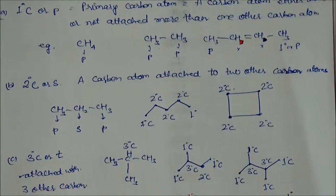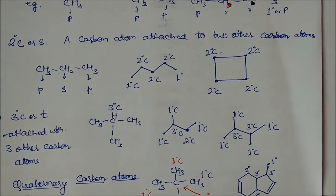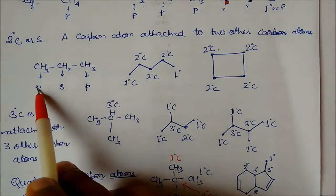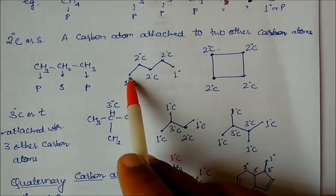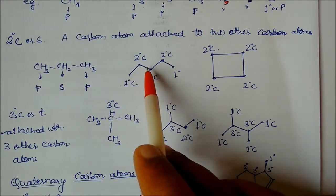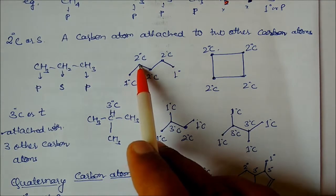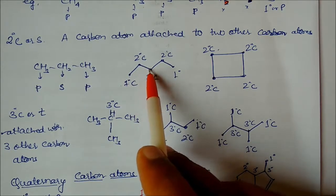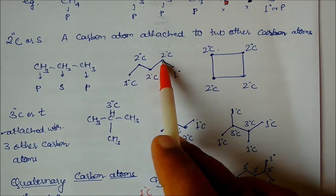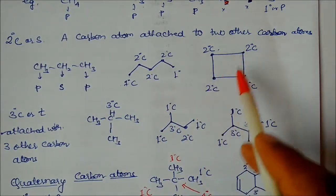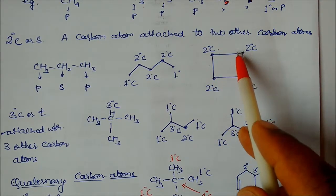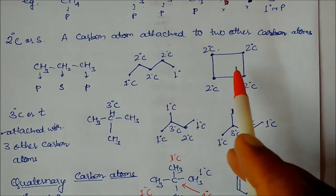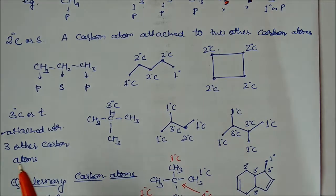Secondary carbon, represented as 2°, means the carbon is attached to two other carbon atoms and has two hydrogens. For example, in a chain, the middle carbon attached to this carbon and this carbon is a secondary carbon. In a ring form as well, each carbon with two bonds to other ring carbons is a secondary carbon.